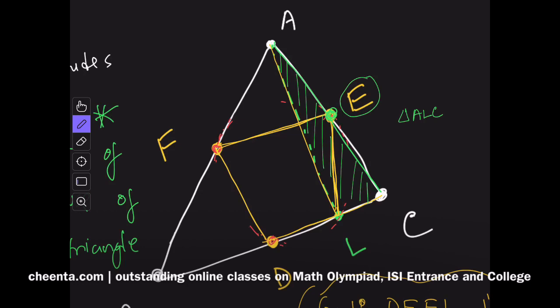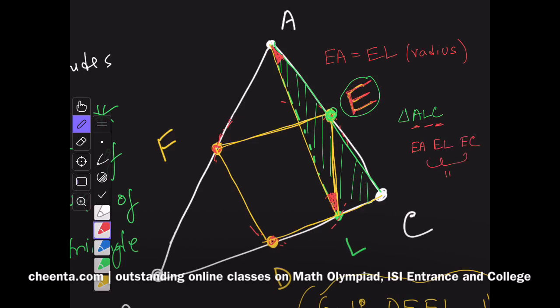This essentially means that these two angles are equal. Why? Because EA is equal to EL—that's the radius. If E is the circumcenter of ALC, then clearly EA, EL, and EC all three of them will be equal. They are the radii of the circle.